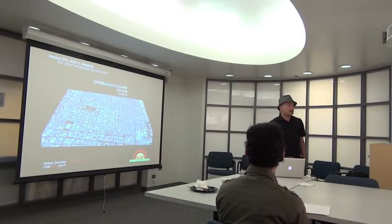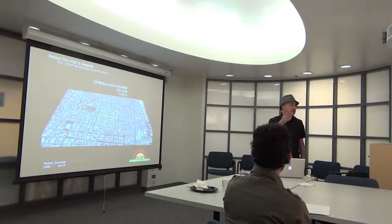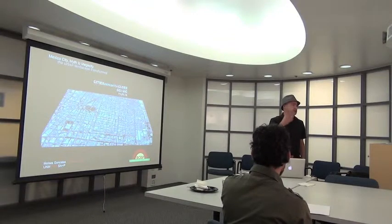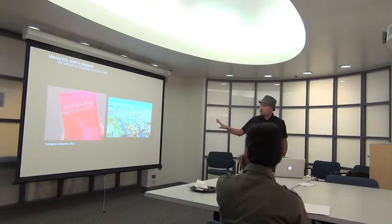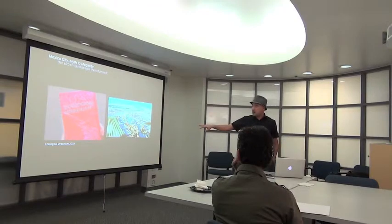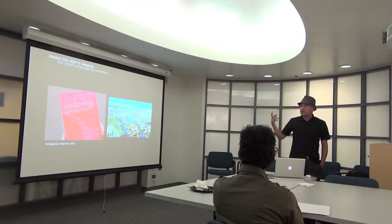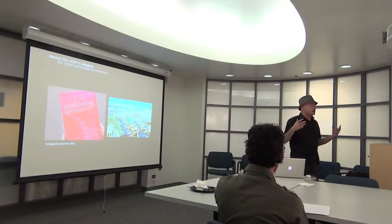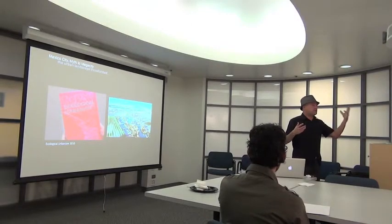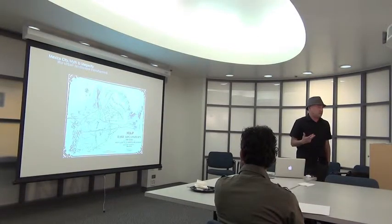I want to go back to Hannah's talk yesterday and look at how we examine ecological structures of systems, how we repair those systems, and how we negotiate the narratives around that. I want to set up the theoretical framework around ecological urbanism — a book published in 2010 at the GSD — which compiled essays around how we reconcile two systems: the function of the urban system and the function of the natural system, because in the history of cities that hasn't necessarily worked out too well.